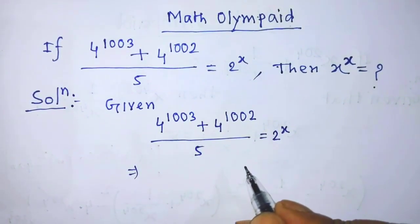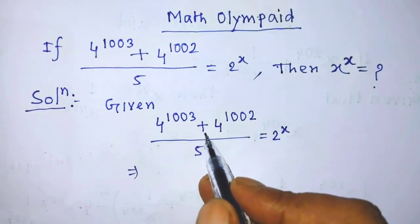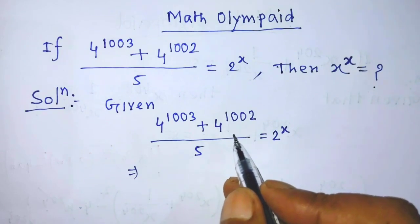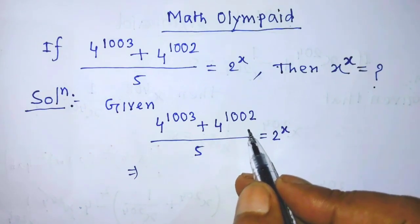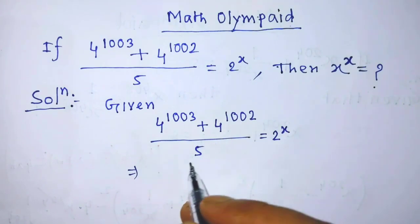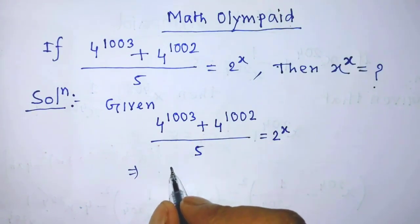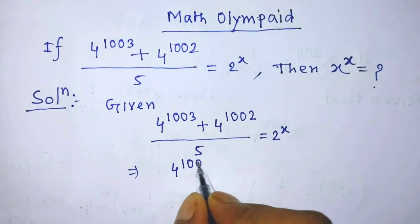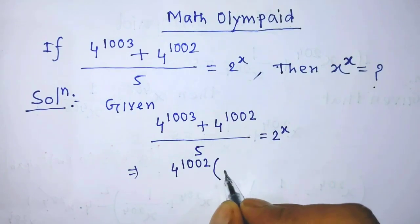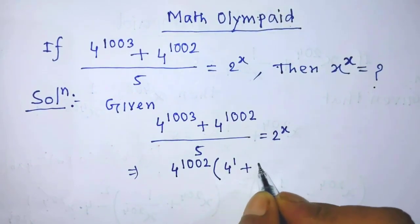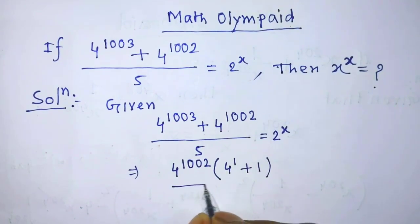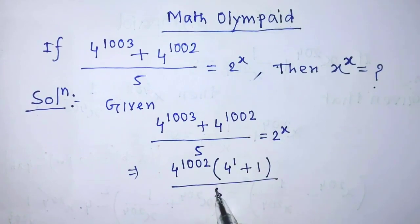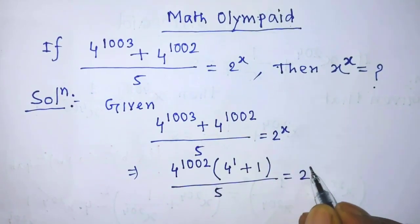On the left hand side, in the place of numerator, there are two terms and the common factor of both terms is 4 to the power 1002. So in the place of numerator, we can write 4 to the power 1002 times (4 to the power 1 plus 1), over 5, is equal to 2 to the power x.